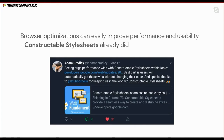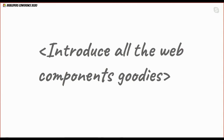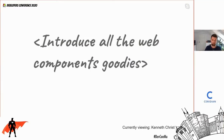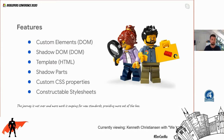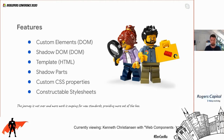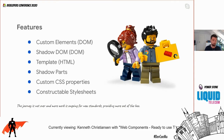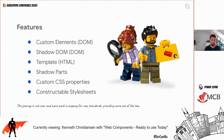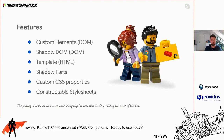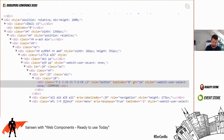Let's look at how web components actually work. There are a lot of different features: custom elements, Shadow DOM, templates, and newer specifications such as shadow parts, custom CSS properties, and constructible stylesheets.